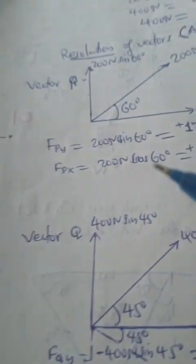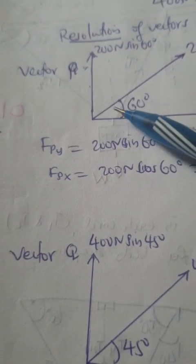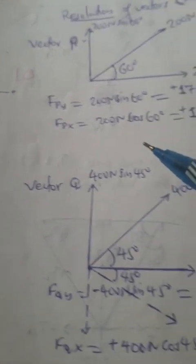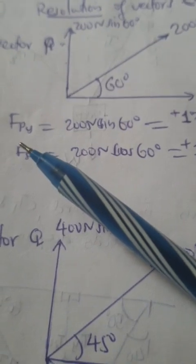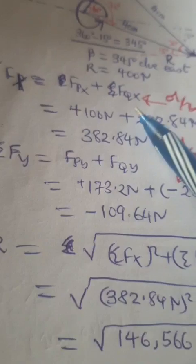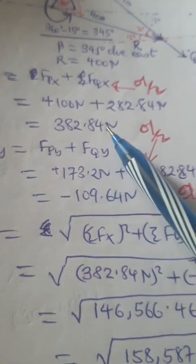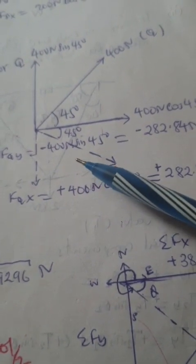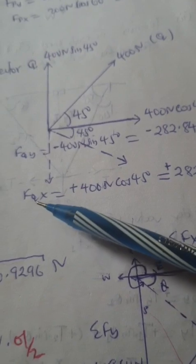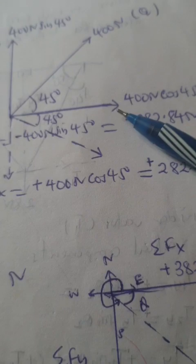Another alternative is resolution of vectors. We have vector P in y direction and vector P in x direction. Also, we have vector Q. This vector Q is at the negative y direction and at the positive x direction.